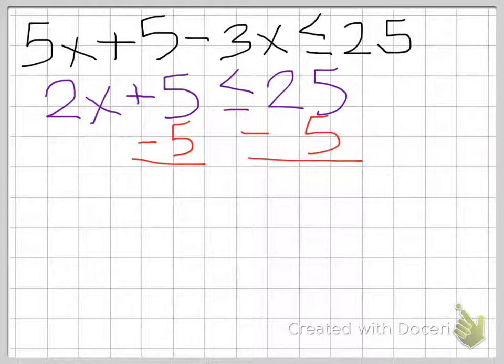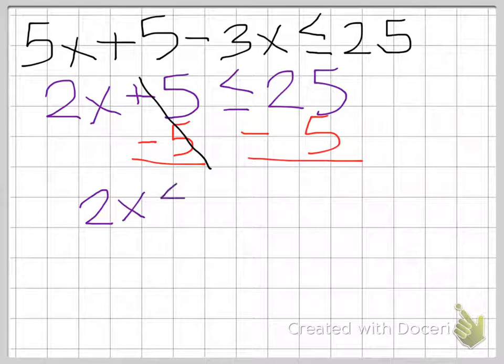Whatever you do on one side of the equation or inequality, you have to do to the other side. It's all about balance. We have to balance the equation. So in looking at this, now that we've subtracted 5 from both sides, 5 minus 5 is 0. So that's the whole reason why we did that.